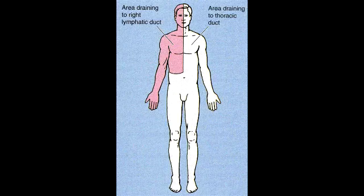What all does the right lymphatic duct drain? The right lymphatic duct drains the right arm, right chest, and right half of the head. What all does the thoracic duct drain? The thoracic duct drains everything else that is not covered by the right lymphatic duct.